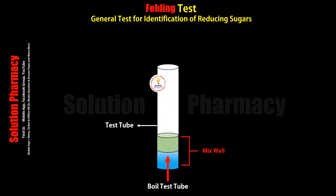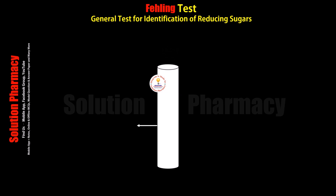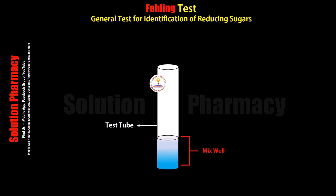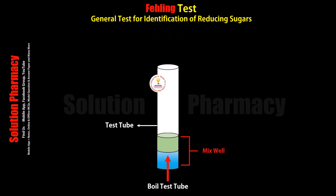Fehling's test is used to detect the presence of reducing sugar in any sample — to detect whether reducing sugar is present or absent. Reducing sugars include glucose, fructose, maltose, and lactose. Glucose and fructose are monosaccharide reducing sugars, while maltose and lactose are disaccharide reducing sugars.